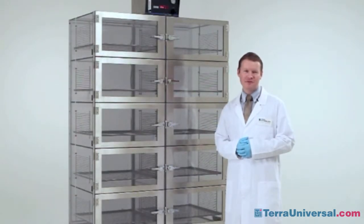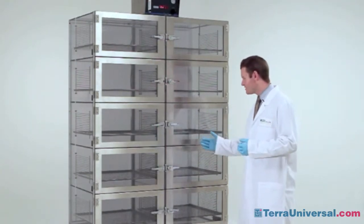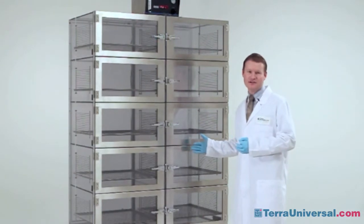One of the components that often breaks down on desiccators are the doors. Terra Universal prevents that by installing stainless steel door frames on each of our desiccator units.